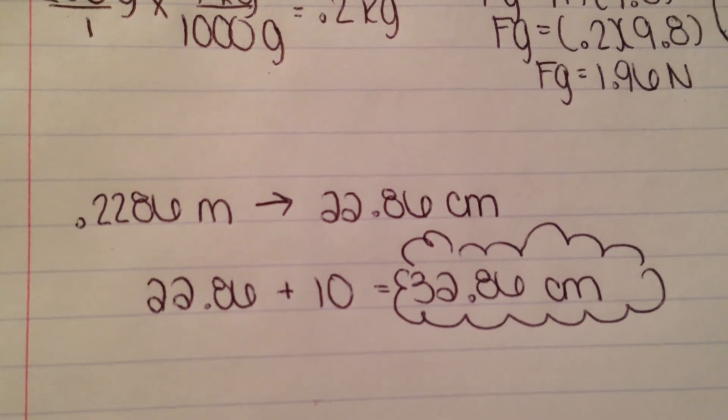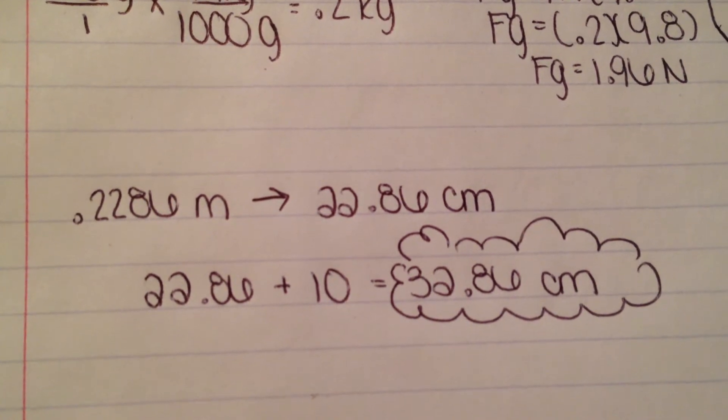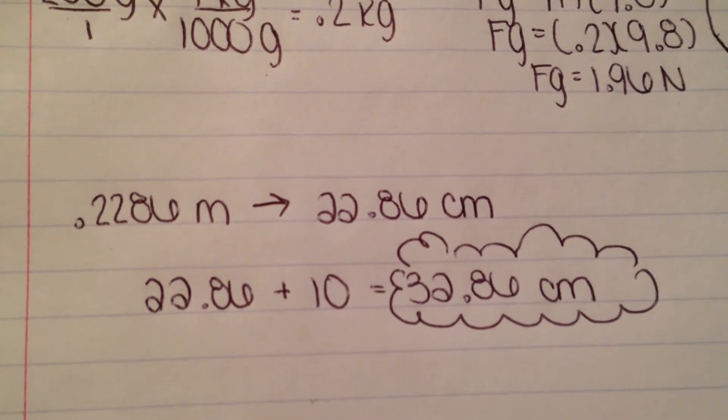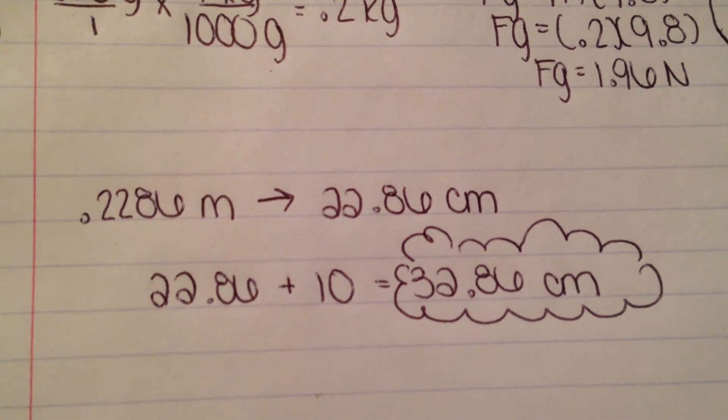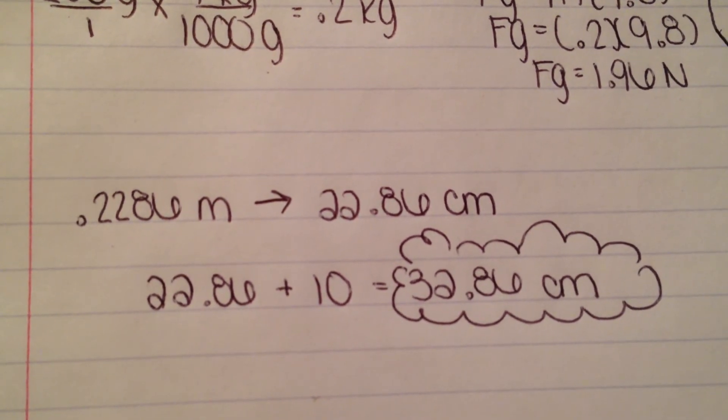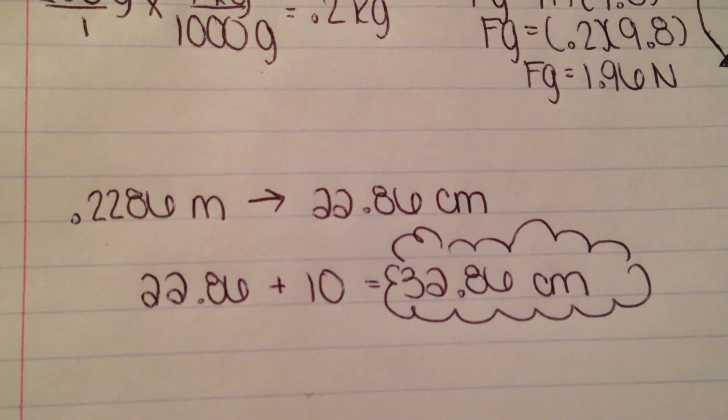22.86 is the x variable, the radius from the 500 gram mass to the support. Since the 500 gram mass starts at 10 centimeters, we need to add the 22.86 centimeters to the 10 centimeters that we already have. 22.86 plus 10 equals 32.86 centimeters, which is where the support needs to be placed to balance the meter stick.